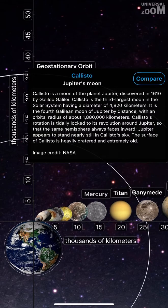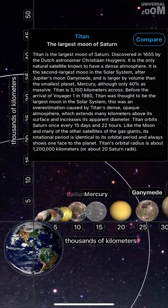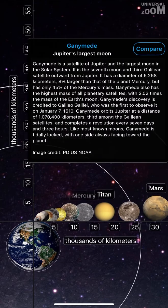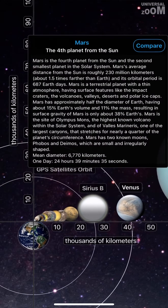Mercury. Callisto, Jupiter's moon. Mercury, the first planet from the Sun. Titan, the largest moon of Saturn. Ganymede, Jupiter's largest moon. Mars, the fourth planet from the Sun.